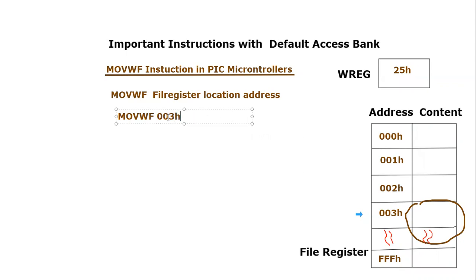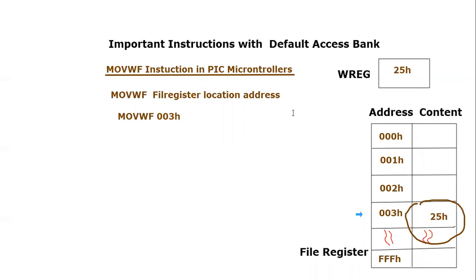This instruction will actually move the content of the working register — which is 25H — into the file register at address 003H. So the file register at 003H will now contain 25H. That is the result of this instruction.